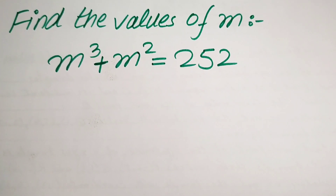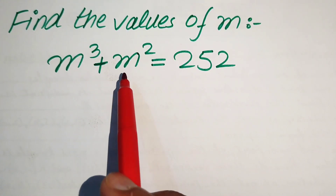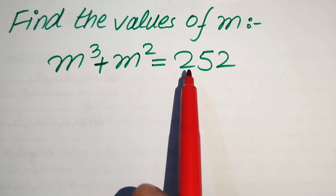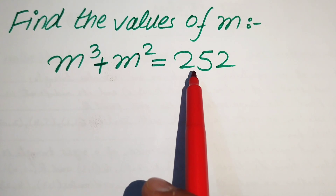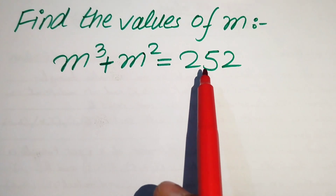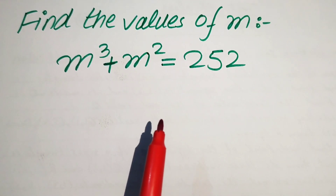Hello everyone, welcome. We solve this algebra problem where m³ + m² = 252 and we find the values of m.